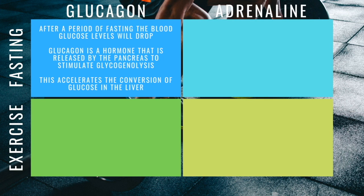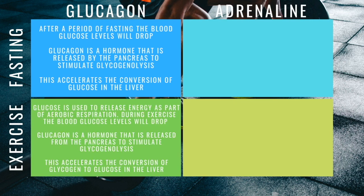We now need to look at glucagon and adrenaline and their role when we fast and when we exercise. After a period of fasting, blood glucose levels drop, and glucagon is a hormone released by the pancreas to stimulate glycogenolysis — its job is to release the glucose stored as glycogen in the liver and enable that glucose in the blood so it can get to the cells for respiration. During exercise, glucose is used to release energy as part of aerobic respiration, blood glucose levels drop, and again glucagon is released from the pancreas to stimulate glycogenolysis, accelerating the conversion of glycogen to glucose in the liver.